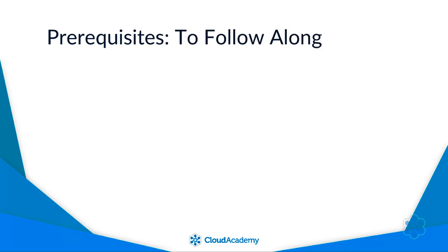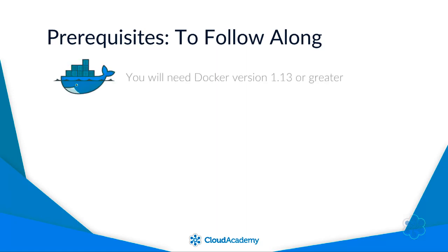You can follow along with the course examples, and I'd encourage you to. You will need Docker version 1.13 or greater installed. I'll be using a Mac with Docker for Mac version 17.12 installed, but you can also follow along in Linux. Swarm Mode in Windows has some additional limitations, mainly around network encryption. I'll mention the limitations when we cover the relevant topic, but almost everything we discuss will apply to Windows environments. I'll be using Linux containers in the demos.